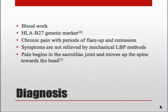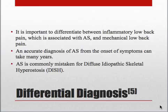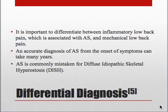SI provocation tests used for mechanical low back pain will be positive in this patient population. It is important to differentiate between inflammatory low back pain, which is associated with AS, and mechanical low back pain. An accurate diagnosis of AS from the onset of symptoms can take many years. Factors contributing to this delay include patients not seeking health care, and existing criteria requiring advanced radiographic changes in the SI joint, which is only found in advanced stages of AS.